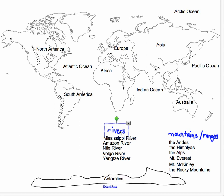Now rivers are represented on maps through blue squiggly lines that run through the map. The five major rivers in the world — look at the word MANVY, M-A-N-V-Y. That's a good acronym to help you memorize the rivers: the Mississippi, the Amazon, the Nile, the Volga, and the Yangtze. MANVY.